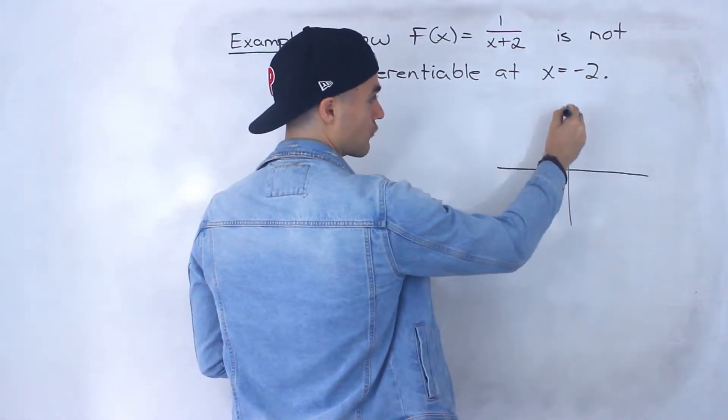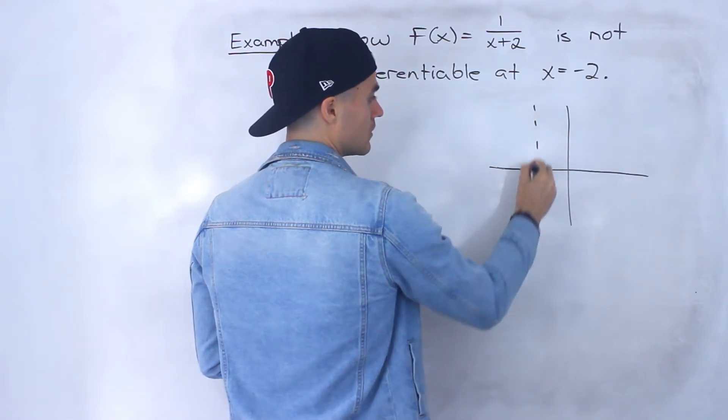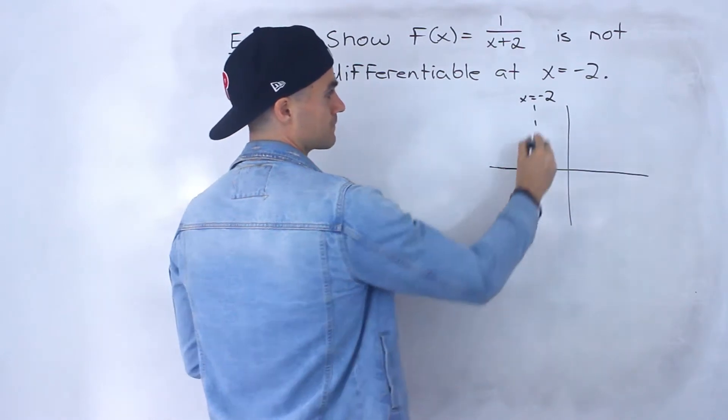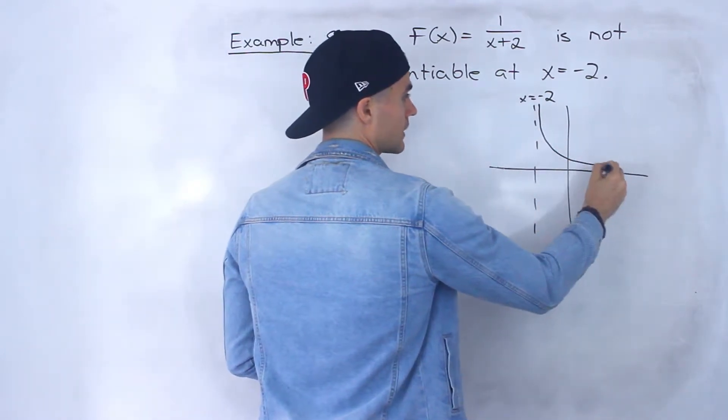So now instead of that vertical asymptote being at 0, it's going to be at negative 2, like that. And so it's going to look like this.